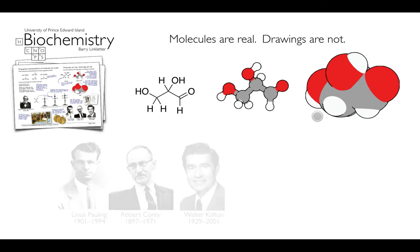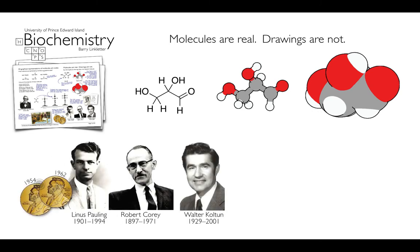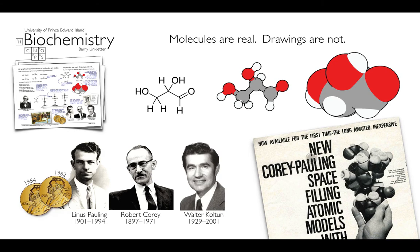This is often called a CPK model after Corey, Pauling, and Colton. Linus Pauling and Corey went to the Caltech woodshop and built wooden molecules at a scale of one inch to one angstrom, using those models to create the first models of the famous alpha helix and beta sheets in proteins. Walter Colton later invented a plastic connector for these models, making them CPK. These models were a mainstay in organic chemistry well into the 90s, until computer graphics replaced them.